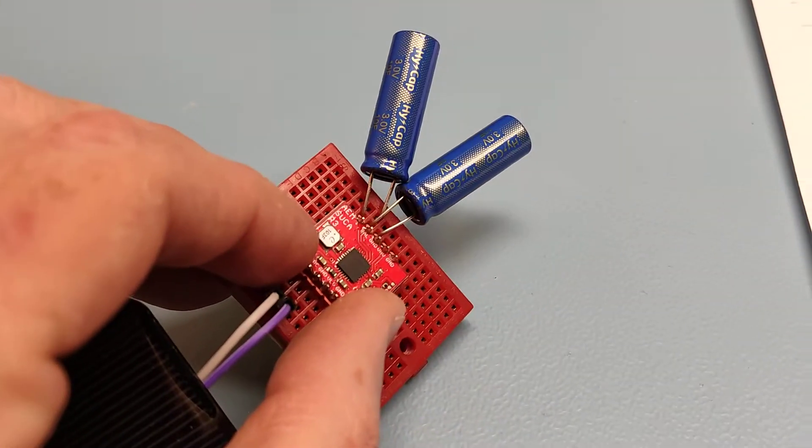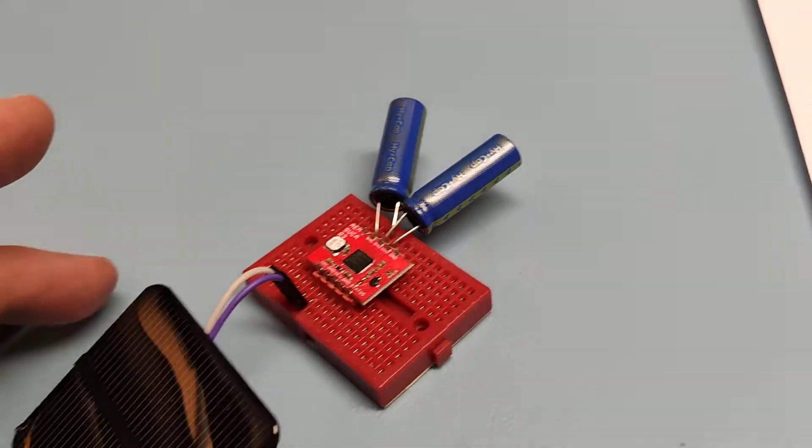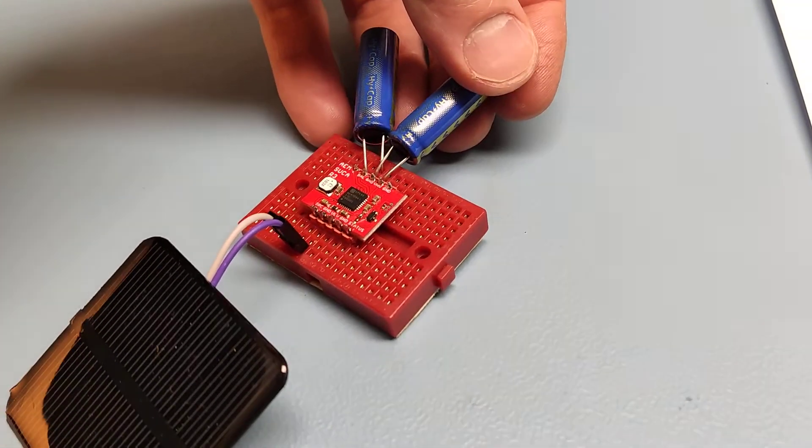This board, the AEM SUKA, is a tiny solar harvesting board that stores solar energy into a pair of supercapacitors.